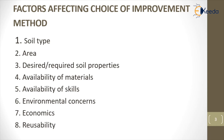Factors affecting the choice of improvement method: first is type of soil and geological structure; second is the area considered for construction and type and degree of improvement required in the soil property; next is availability of equipment and material and the quantity of work to be completed within a time limit; next is environmental concern — possible damage to adjacent structures or pollution of groundwater resources; and finally, cost and reusability of the material used.